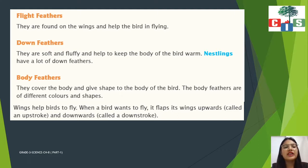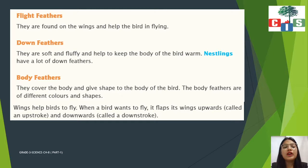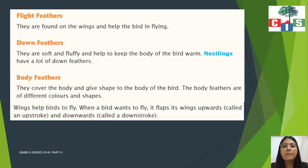The third type of feather is the body feather. Body feathers cover the body and give shape to the body of the bird. The body feathers are of different colors and shapes. So to recap: flight feathers are used for flying, down feathers keep the bird warm, and body feathers give shape to the body of the bird.